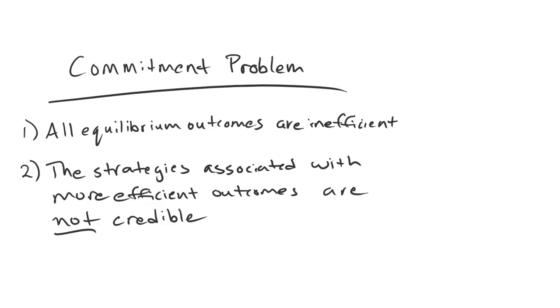We're going to see how an outcome of a game is inefficient, and we're then going to explain how the strategies associated with the more efficient outcomes, namely the situations where we have a deal being made, just are not credible.